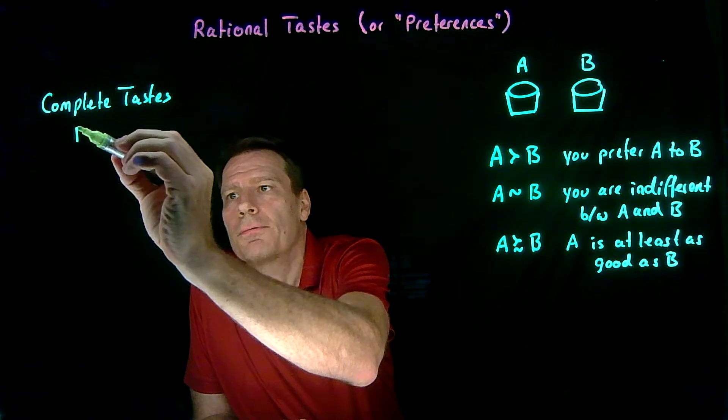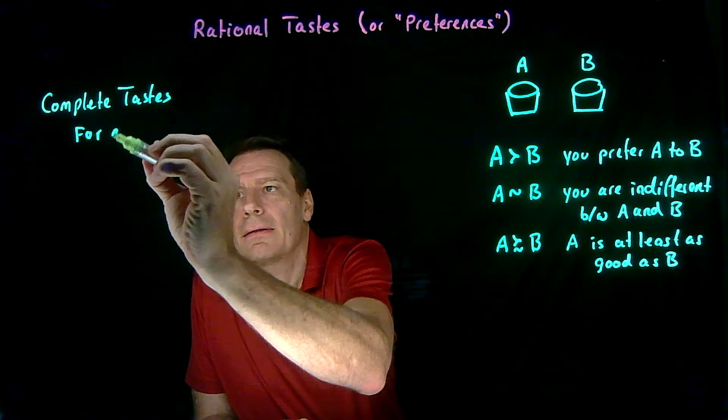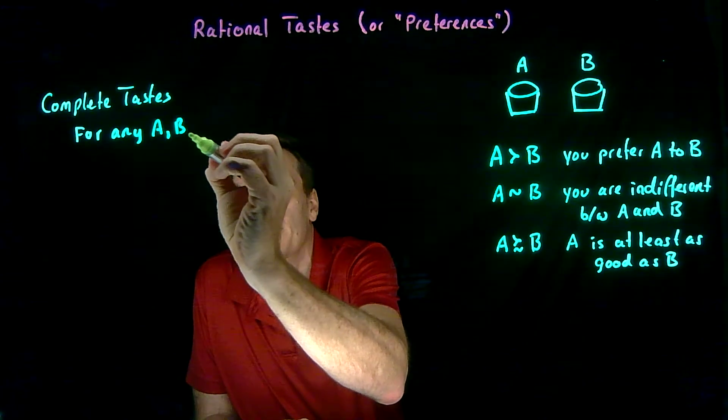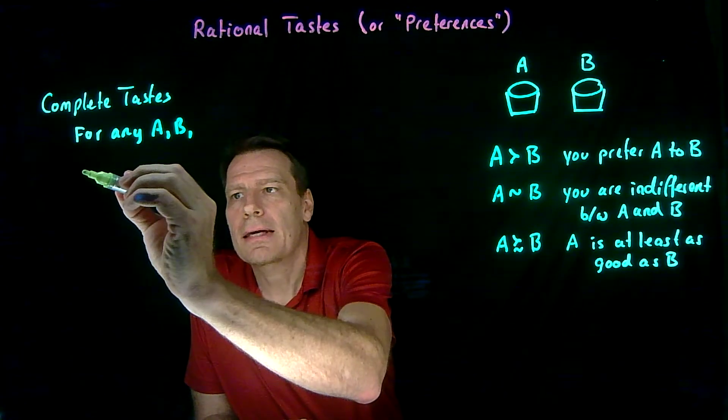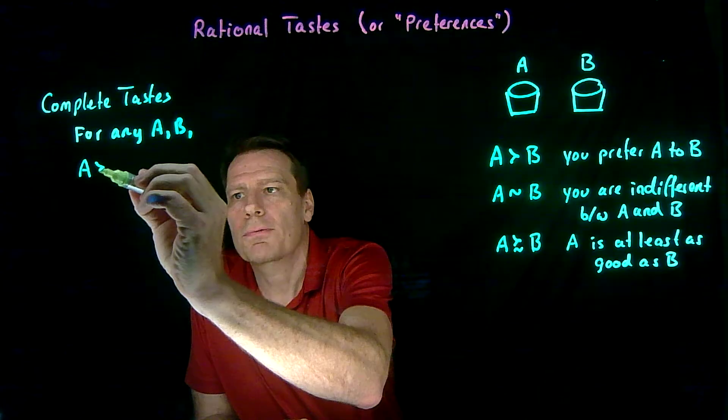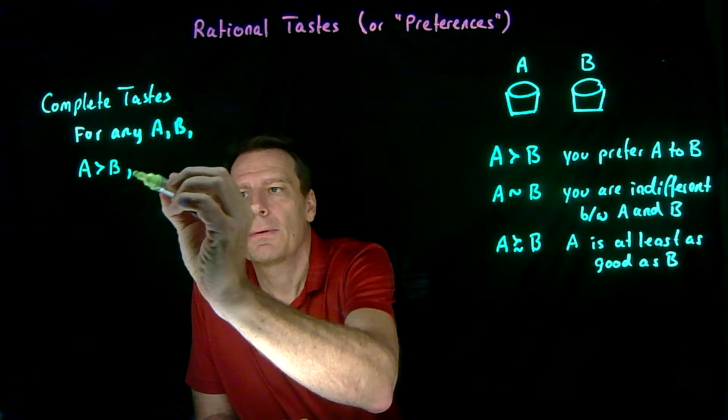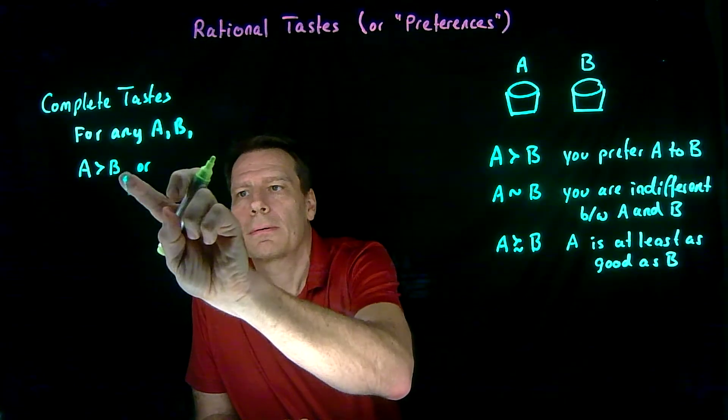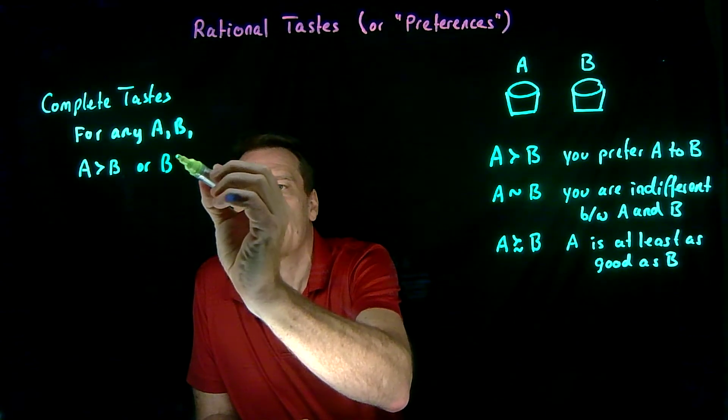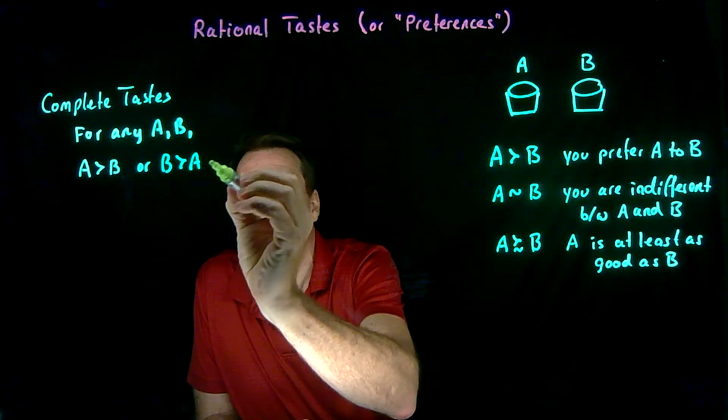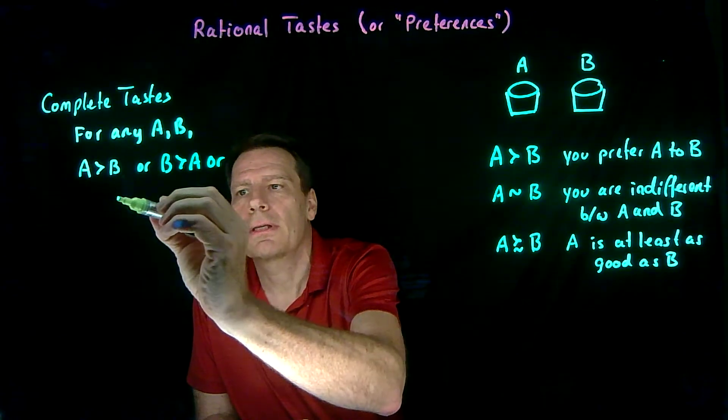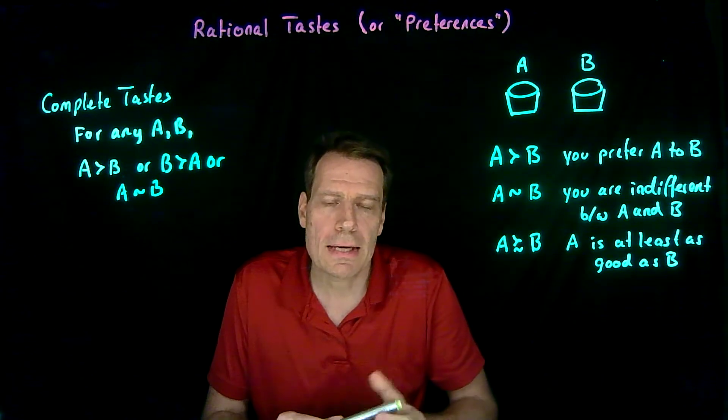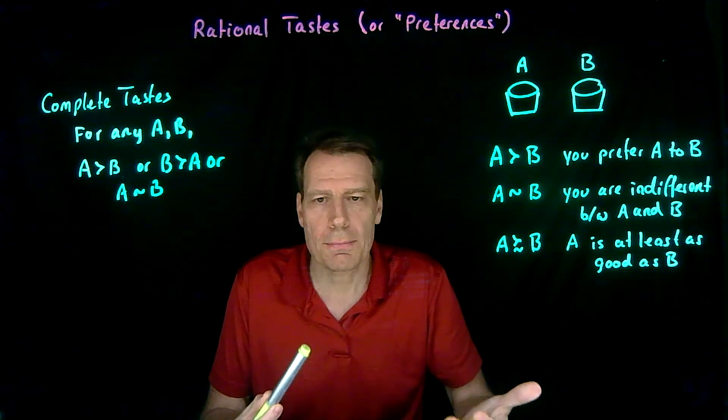So your tastes are complete if for any two baskets A and B, it's either the case that A is preferred to B, or B is preferred to A, or you're indifferent between the two.